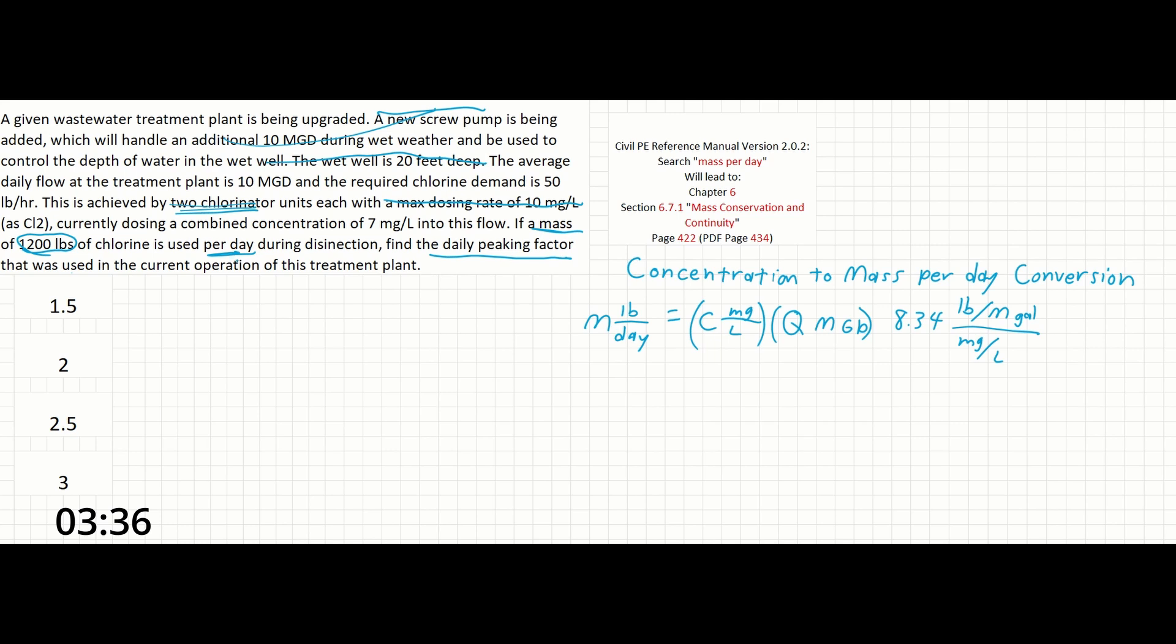All this problem requires is that you understand two things: how to convert pounds per day to milligrams per liter, which is going to be given by the reference manual here, and knowing that total flow is going to be the average daily flow times the peaking factor. So let's include peaking factor into this equation as well.